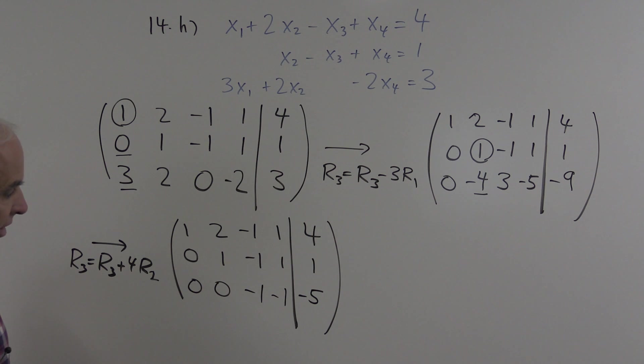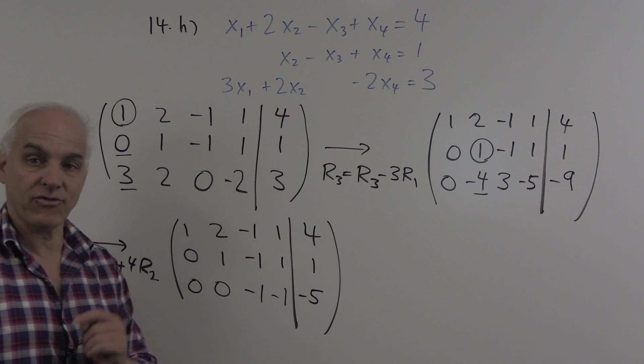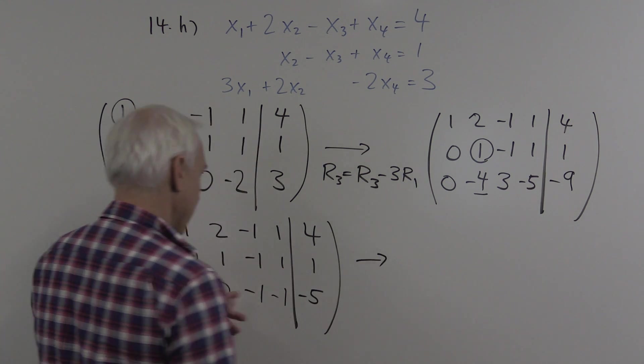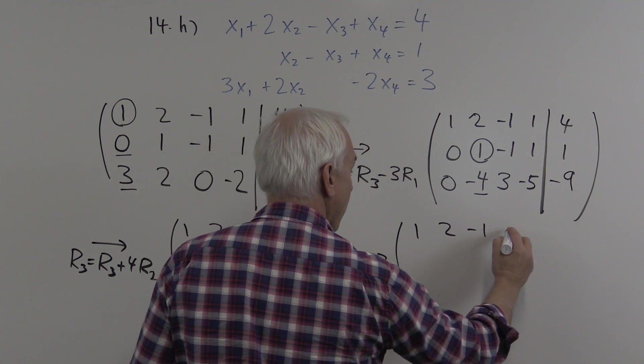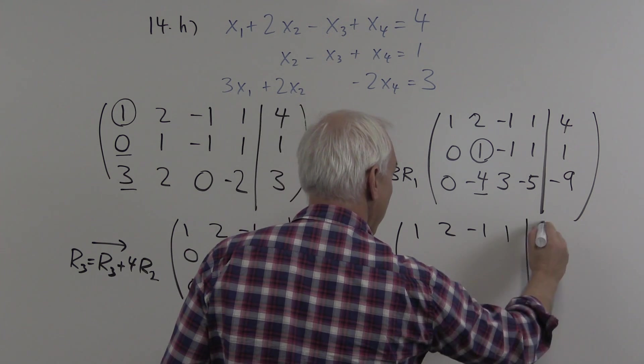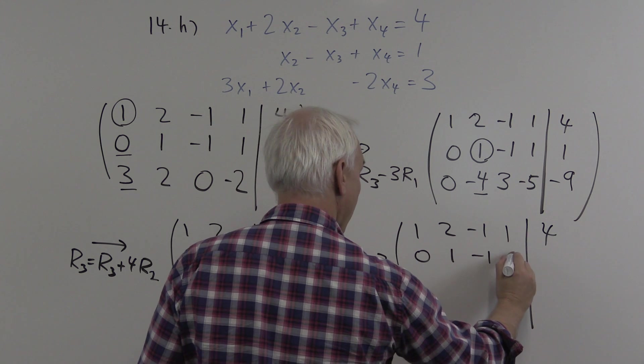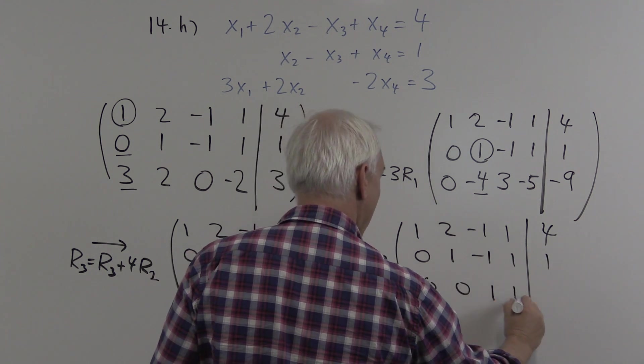We're going to do a little bit more cleaning up. We'd like to have this first entry of this row here being plus 1, so we're going to multiply this last row by minus 1, giving us 1, 2, minus 1, 1, and 4; 0, 1, minus 1, 1, and 1; and 0, 0, 1, 1, 5.